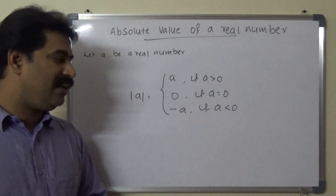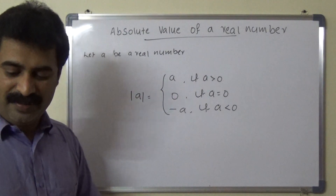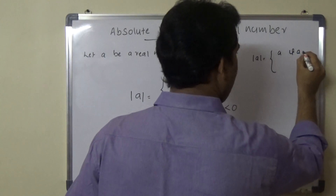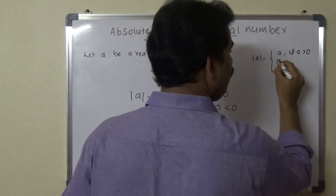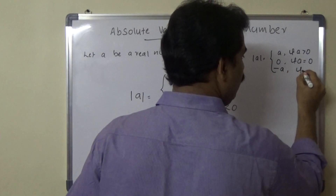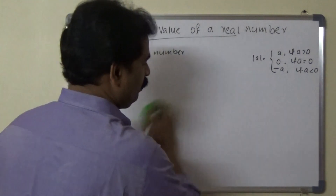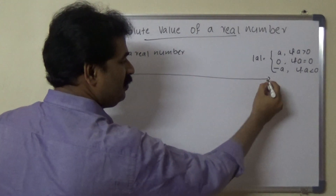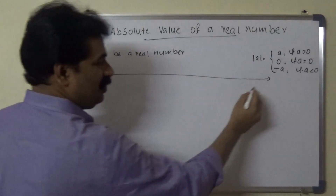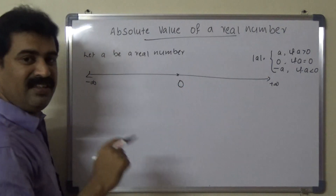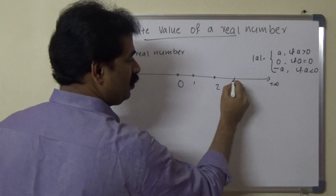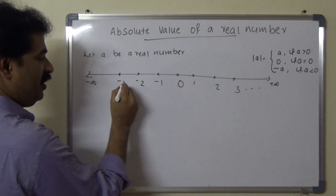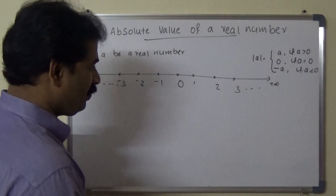Next, we will discuss the geometrical representation of the absolute value of a real number. We can draw a real line from minus infinity to plus infinity, with 0 as the origin. The numbers 1, 2, 3 are positive real numbers, and minus 1, minus 2, minus 3 are negative real numbers.